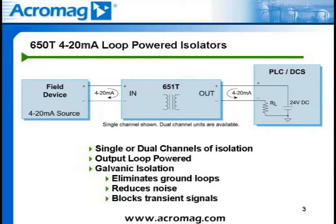Certain monitoring applications require tapping off an existing 4 to 20 milliamp DC loop to add a measuring or monitoring instrument. The 651T and 652T are ideal for this application because of the low 10-ohm input burden. If the isolator fails or loses power, it will not interfere with the existing 4 to 20 milliamp DC loop. The output of the isolated transmitter in this application can be wired to a field chart recorder or another PLC to enable redundant monitoring.